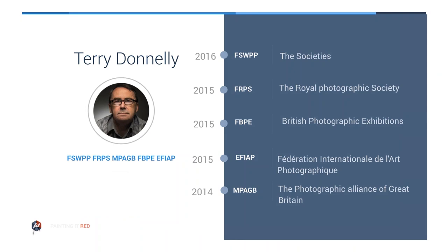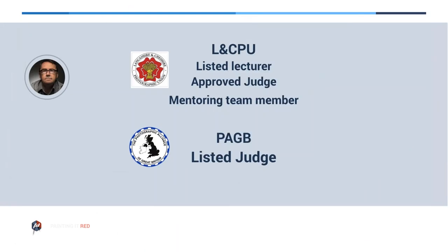So I mentioned the fellowships before — I've done one with the societies and one with the Royal Photographic Society. I've done one with the British Photographic Exhibitions, which is a cumulative fellowship you can work towards through acceptances and awards at national exhibitions. The E-FIAP is from FIAP, an international award based on a cumulative number of acceptances at international exhibitions. And the MPAGB is the Masters with the Photographic Alliance of Great Britain — that's their top level award. I'm also a PAGB listed judge, which is the highest level of judge in the UK in the non-professional world.